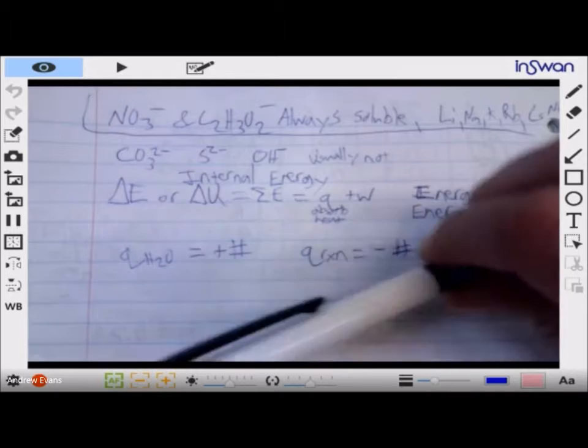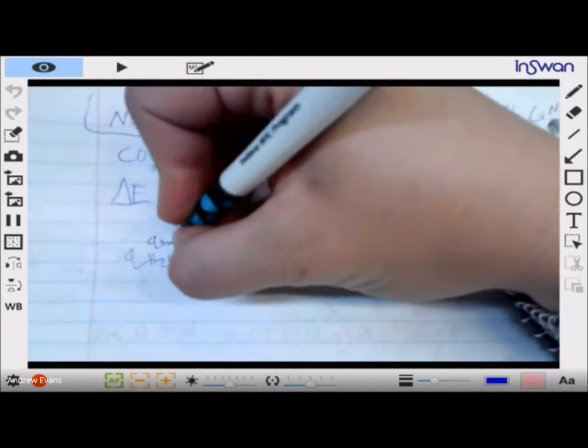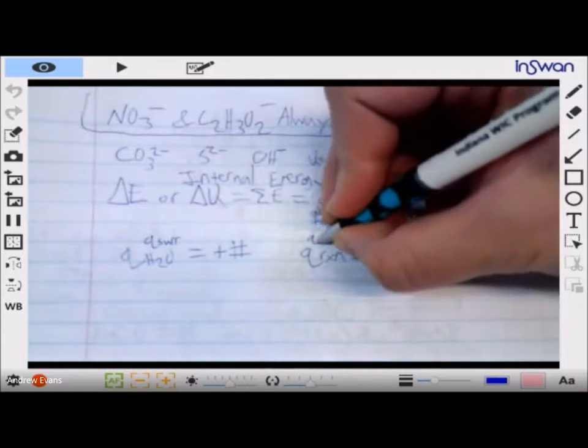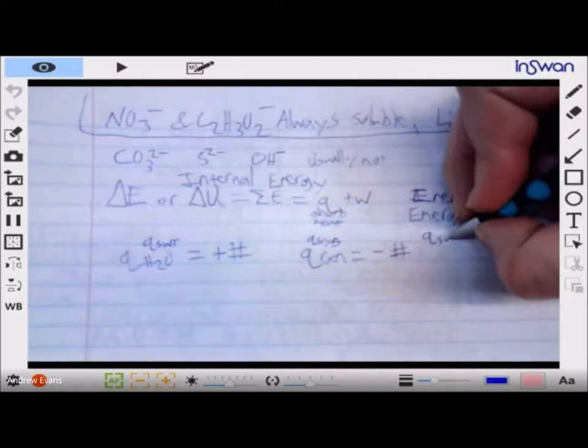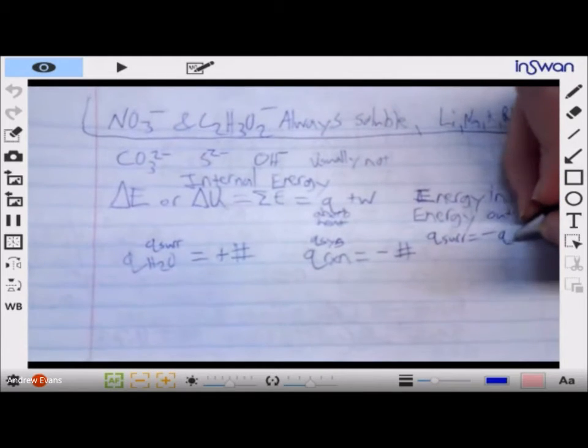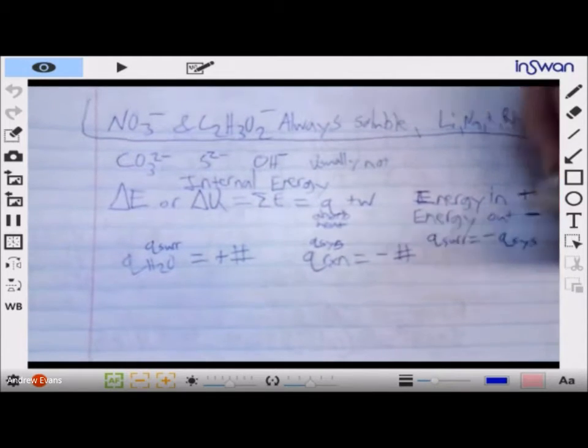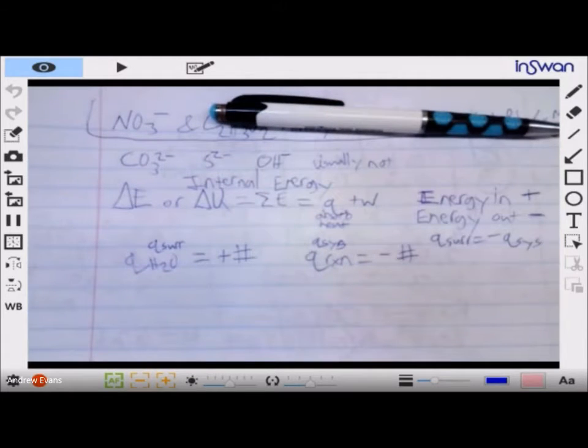In this case we would say q surroundings and the reaction was q system. One of the big things to remember is that q surroundings must always be equal and opposite to q system. The idea here is that energy is universally conserved. Energy has to come from somewhere, has to go somewhere - energy is not just lost. It has to go somewhere whether that's to the surroundings or into outer space, it's going somewhere.